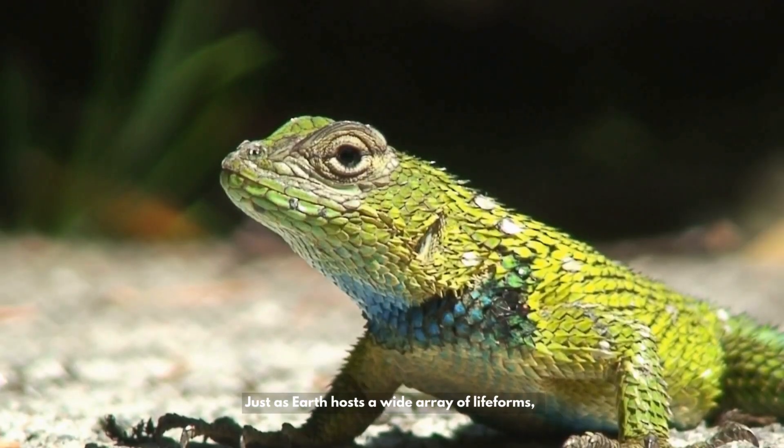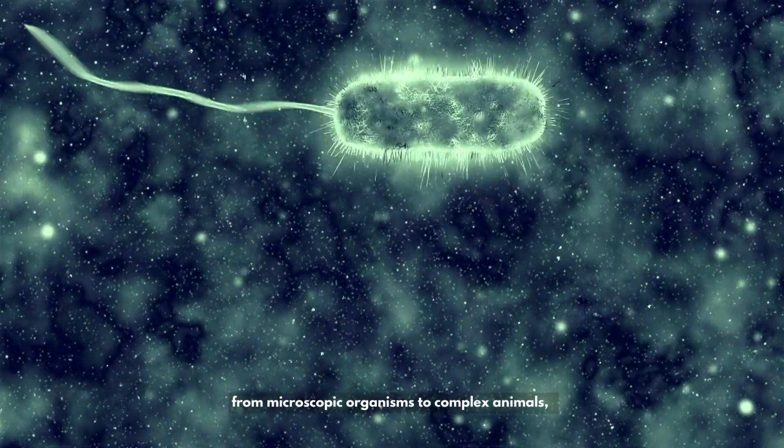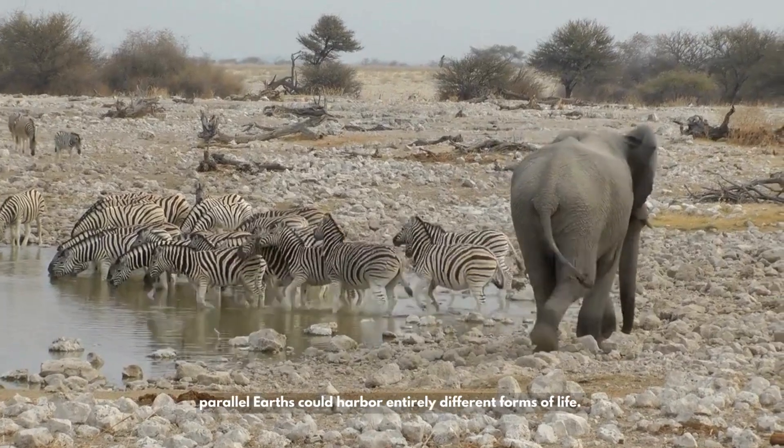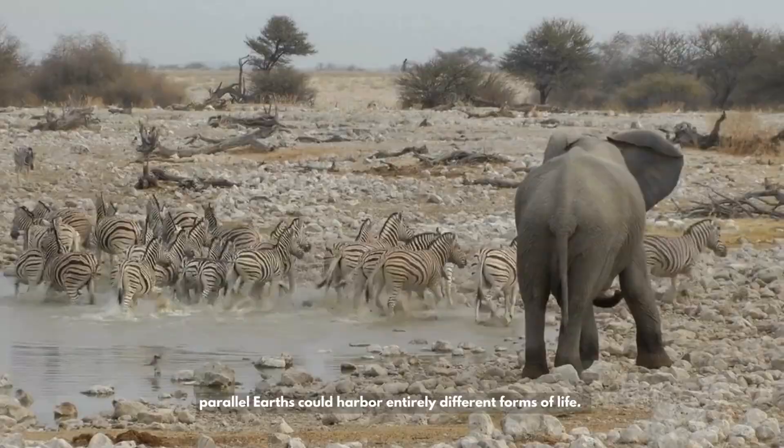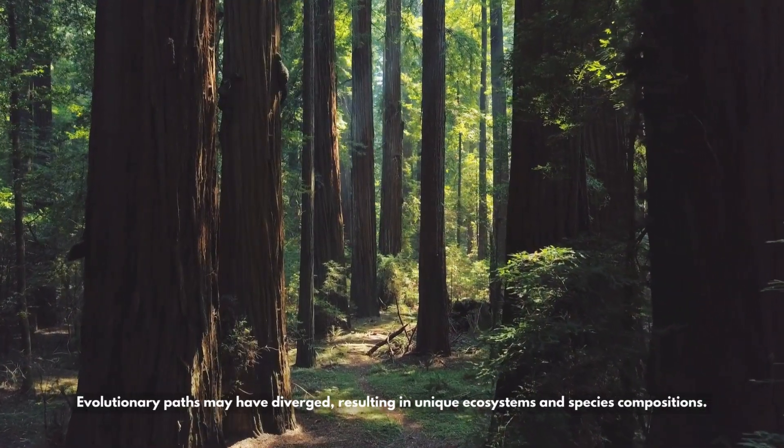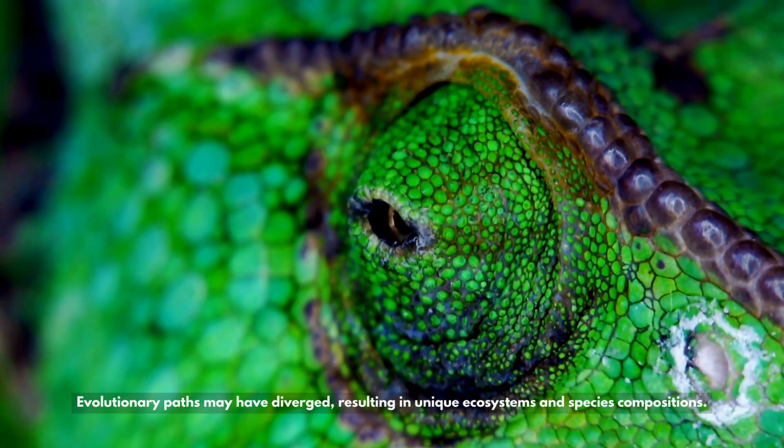Diverse lifeforms: Just as Earth hosts a wide array of lifeforms, from microscopic organisms to complex animals, parallel Earths could harbor entirely different forms of life. Evolutionary paths may have diverged, resulting in unique ecosystems and species compositions.